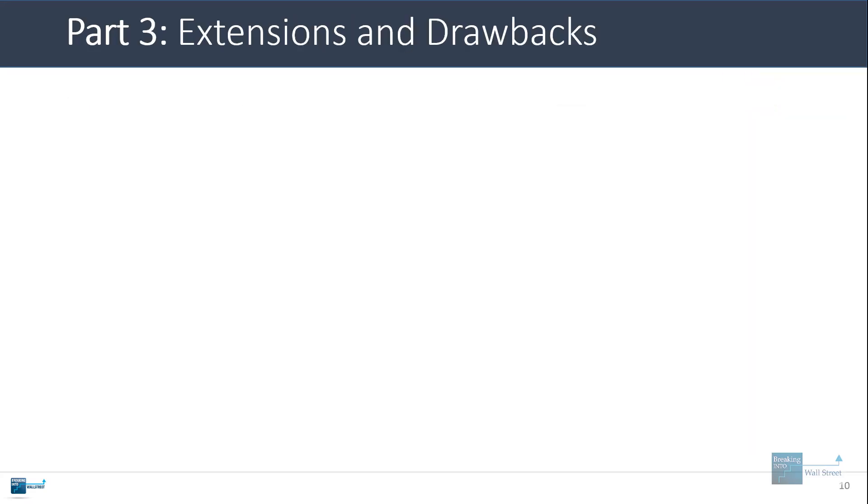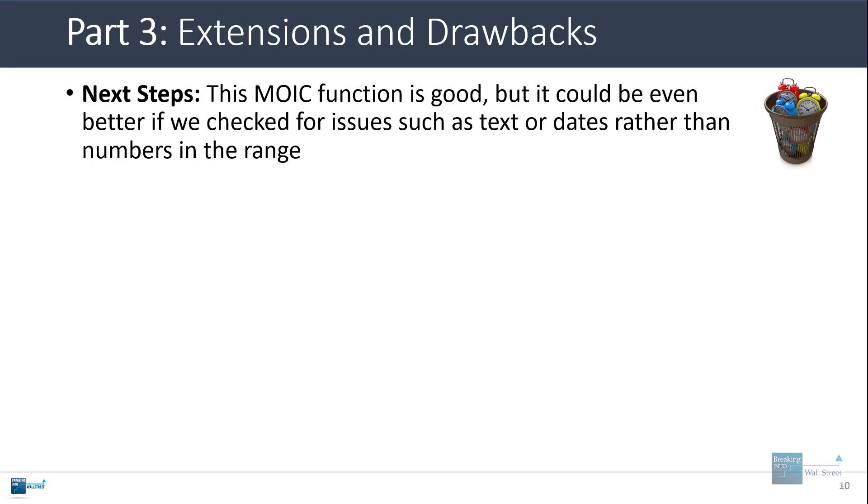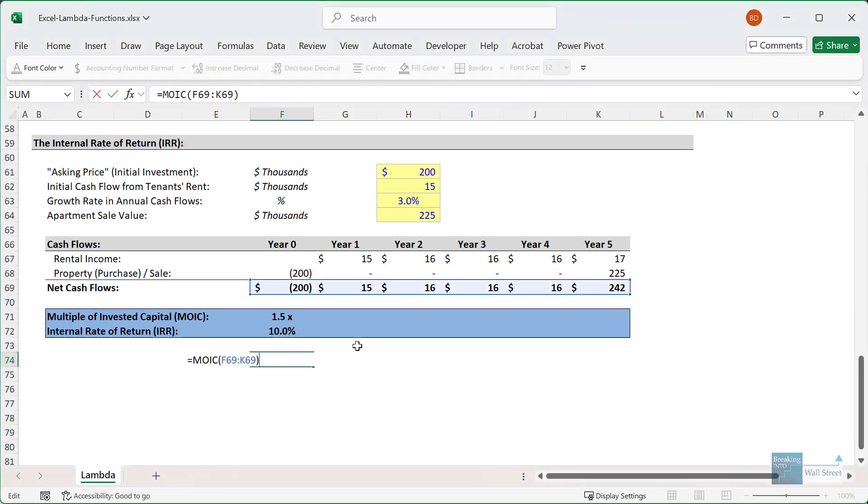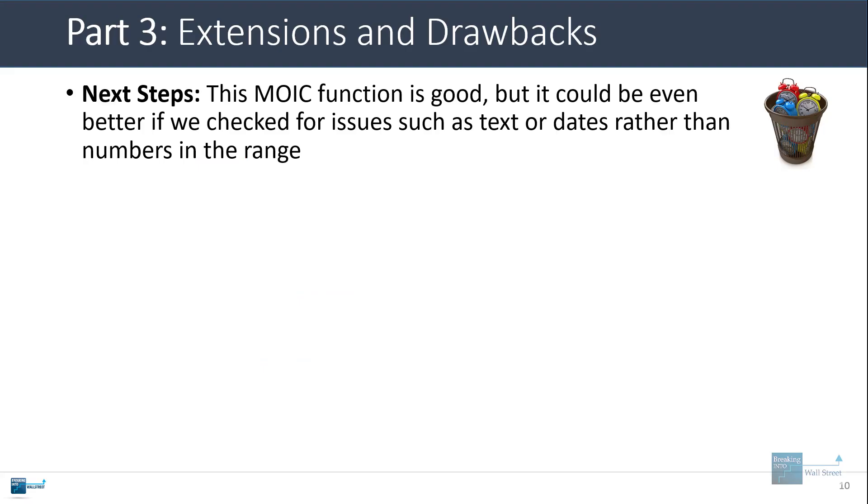Let's go to the last part now and talk about how to extend this and some drawbacks. So this multiple of invested capital function is good, but it could be even better if we added more error checking. For example, here, it's good to check for one positive one negative number. But we'd also want to check to make sure we're not applying this to text or dates or other things that are not true number values in Excel. That gets a bit tricky. So I'm not going to go into it here. But that would be something else that we could potentially add to it.